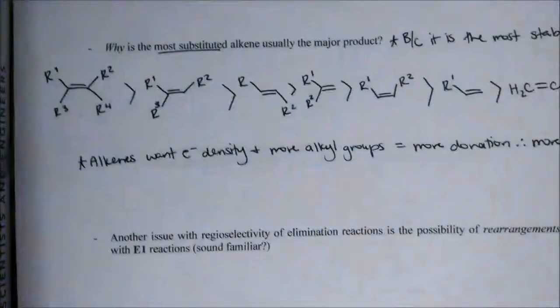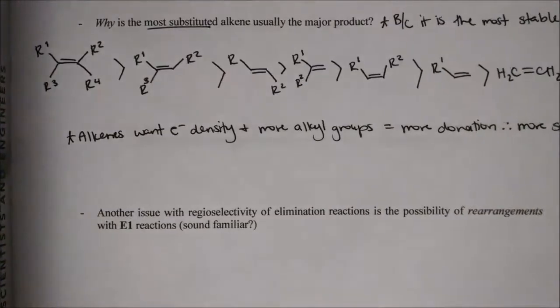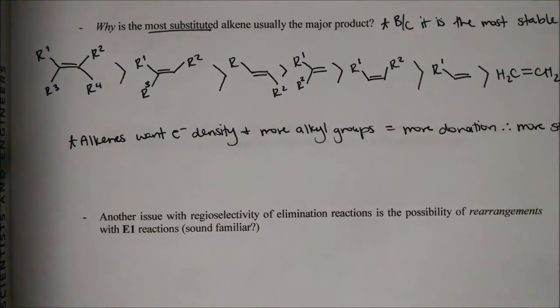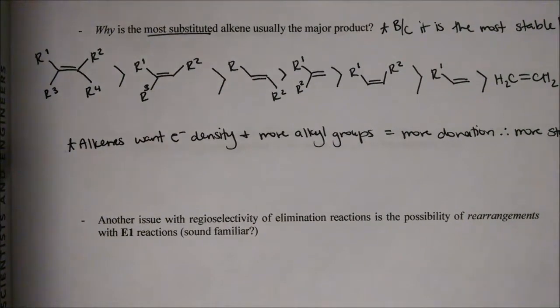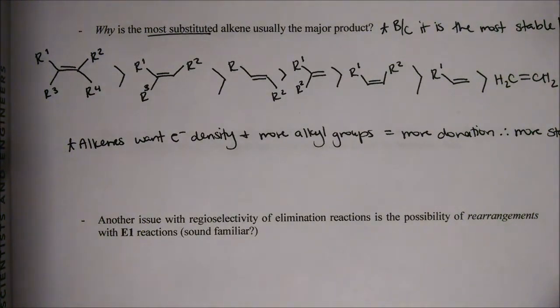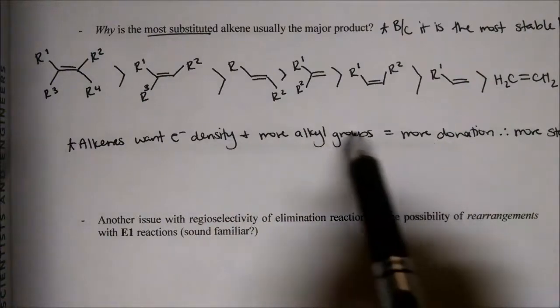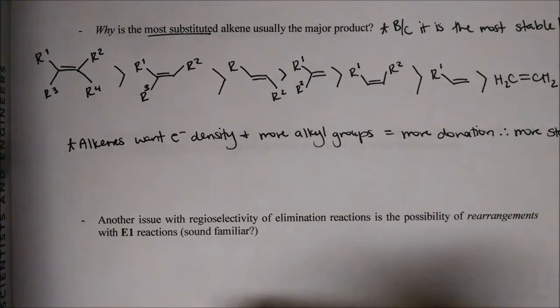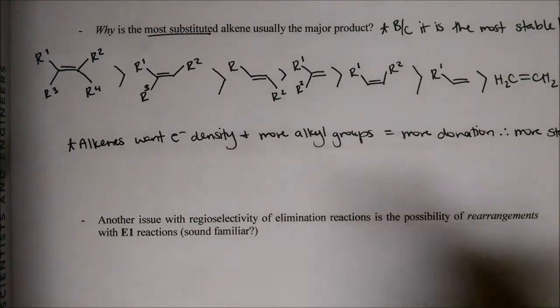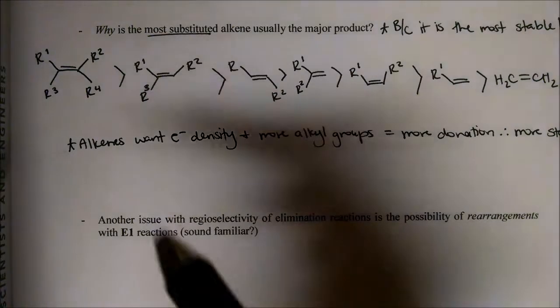The last thing we talked about was why the most substituted alkene is the major product - it's because it's the most stable. Alkenes, just like radicals and carbocations, want electron density. The more alkyl groups we have on there, the more electron density we have to donate, and therefore we have the most stable alkene.